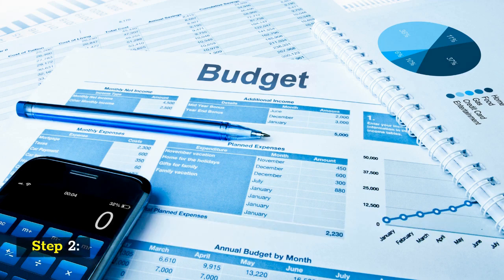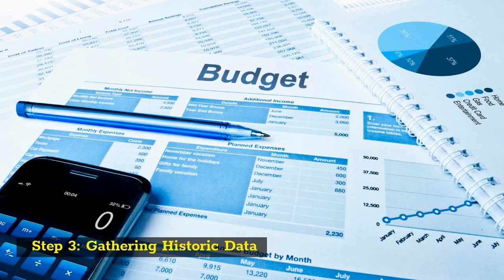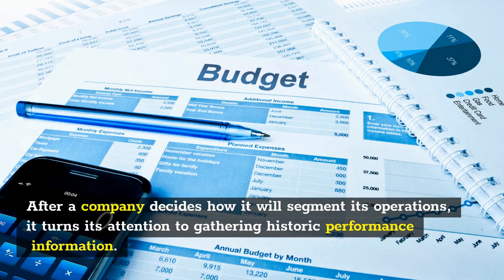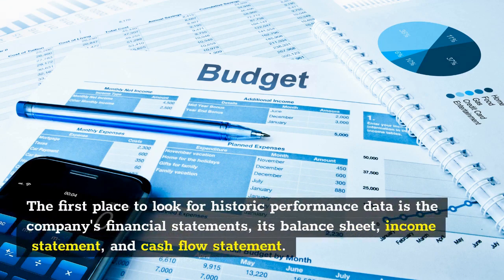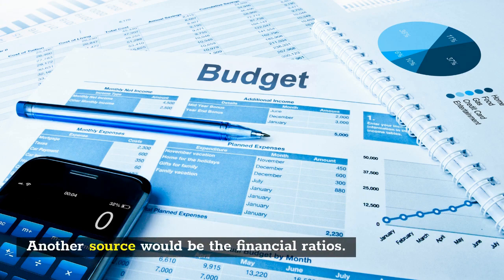Step two: deciding what you're going to measure. Step three: gathering historic data. After a company decides how it will segment its operations, it turns attention to gathering historic performance information. The first place to look for historic performance data is the company's financial statements — its balance sheet, income statement, and cash flow statement. Another source would be financial ratios.